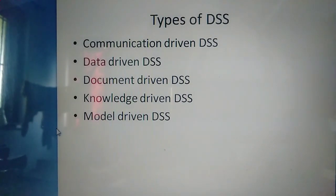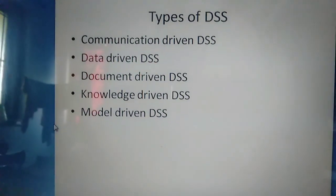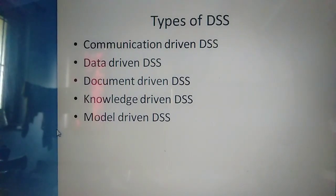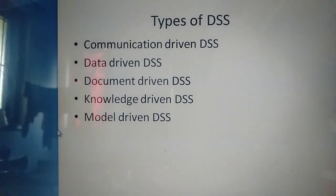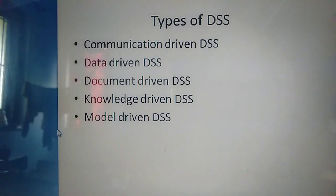The types of DSS are: communication driven system, data driven system, document driven system, knowledge driven system, and model driven system. The communication driven system relies on a hybrid network and electronic communication technologies to connect decision makers and create an environment of resource and information sharing, collaboration, and communication among a group of decision makers. Examples include electronic mails, interactive videos, video conferencing, audio conferencing, file sharing, and report boards.